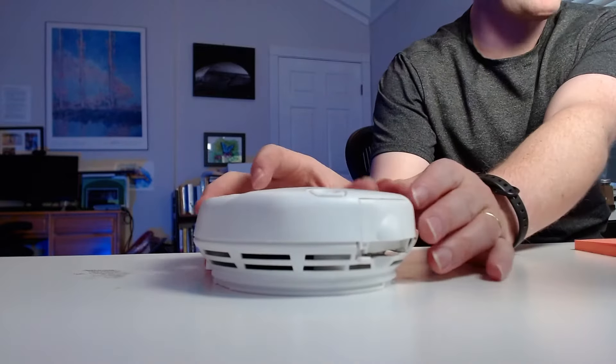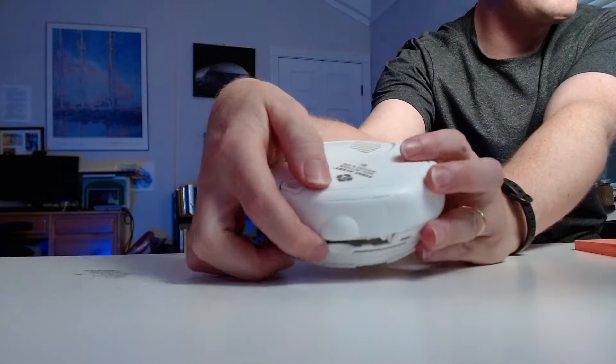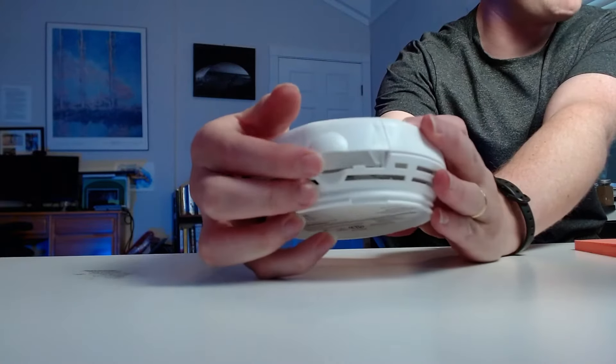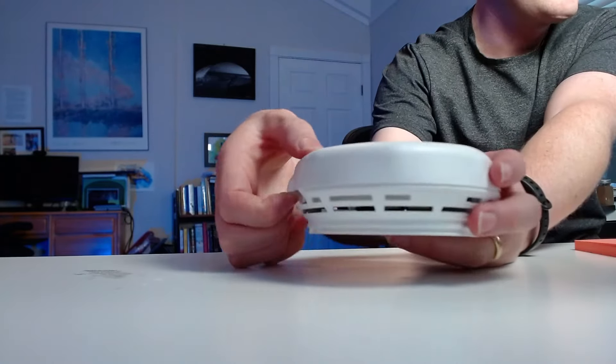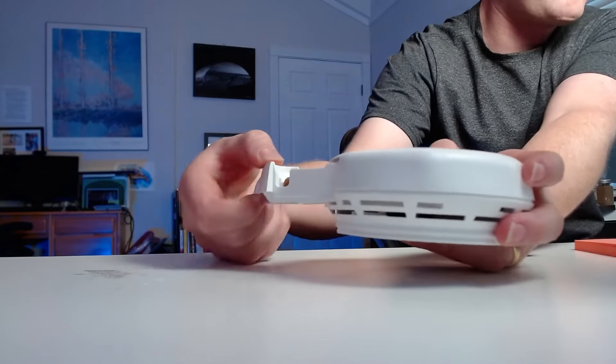So our first step here is going to be to find the battery compartment. It varies a little bit on each model, but basically we're looking for this little sliding part that pulls out. It's got this little piece we can go ahead and pull. I'm going to just give that a solid pull, pull that battery compartment out.